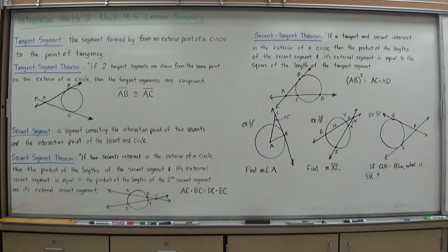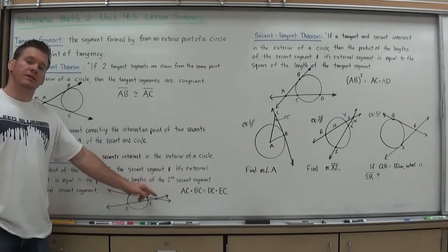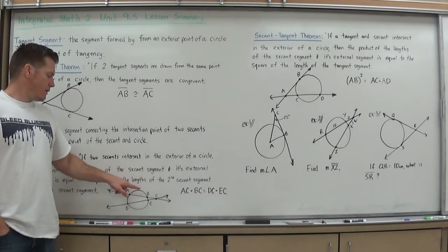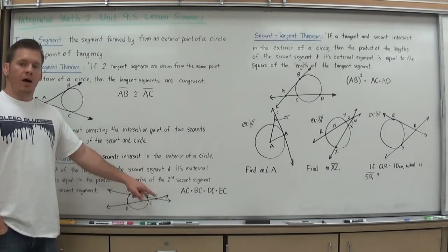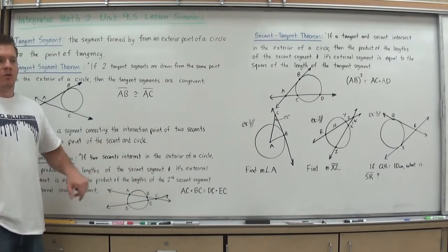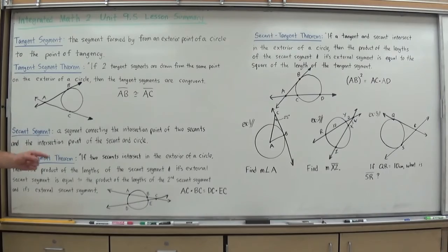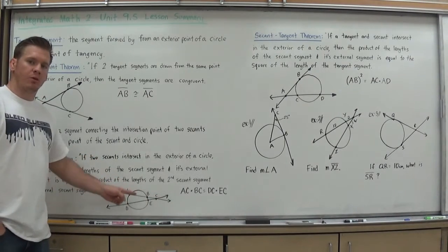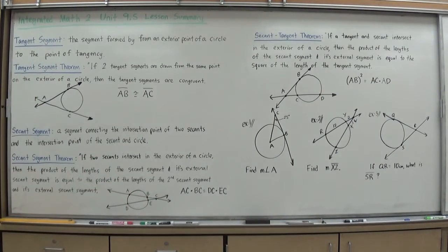Segment AC times segment BC must be equal to segment DC times EC. A lot of students will get this mixed up and do AB times BC instead, the interior chord basically, instead of the whole secant. Remember, secants are going all the way through, so a secant segment has to be the whole thing from the exterior point. Otherwise, you're doing a chord.